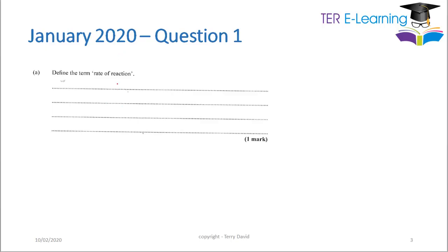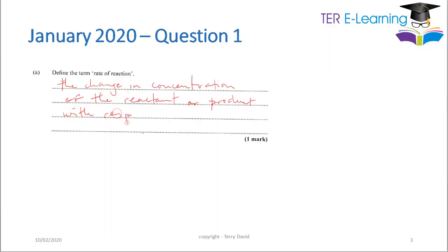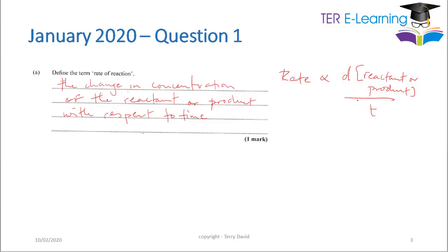The first part asks: define the term rate of reaction. The rate of a reaction is the change in concentration of the reactant or product with respect to time. Mathematically, rate is proportional to the change in concentration of reactant or product over time. You're not expected to know this formula, but the definition is: the change in concentration of the reactant or product with respect to time.